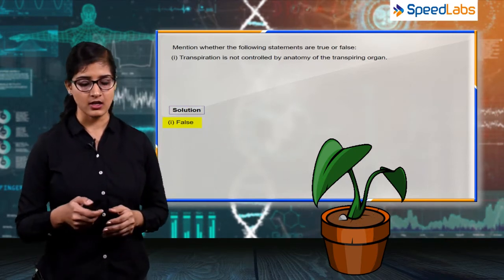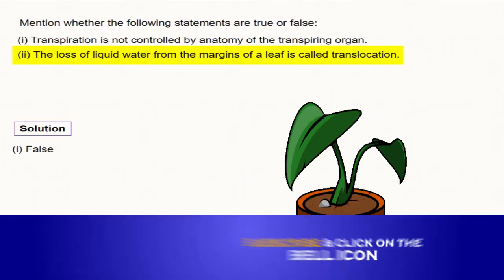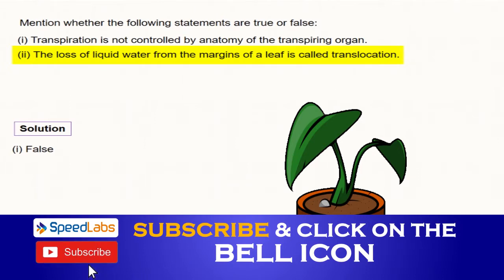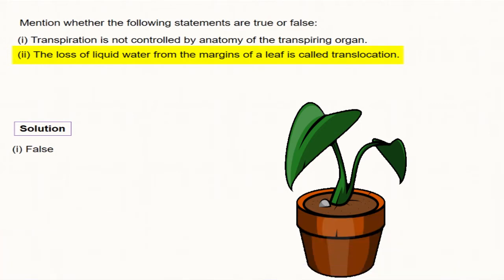Now the next statement is the loss of liquid water from the margin of a leaf is called translocation. Now again this statement is false, as the loss of water from the margin is called as guttation.